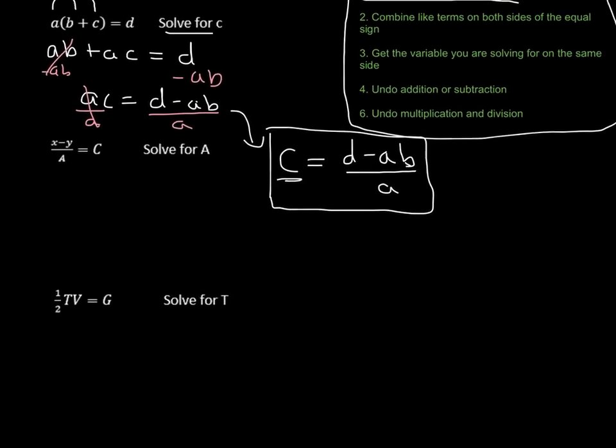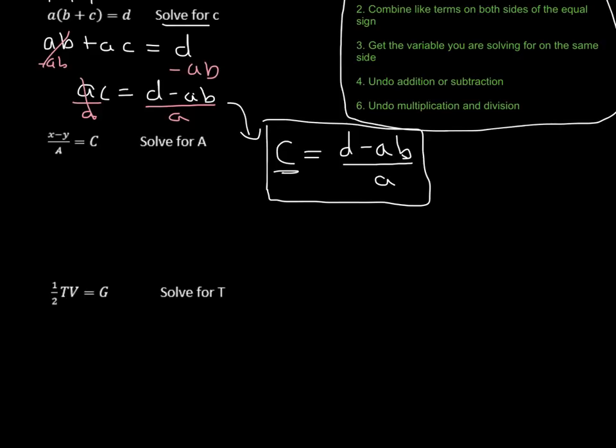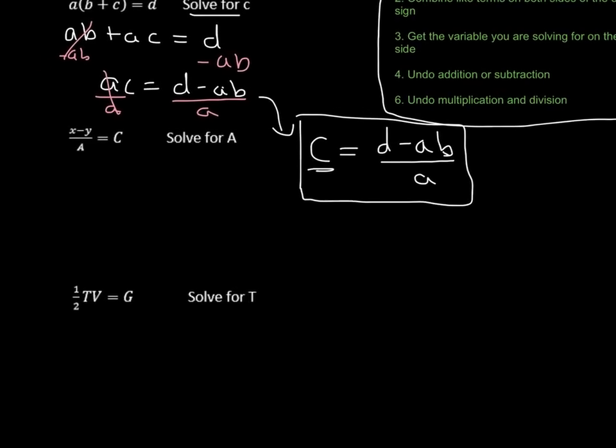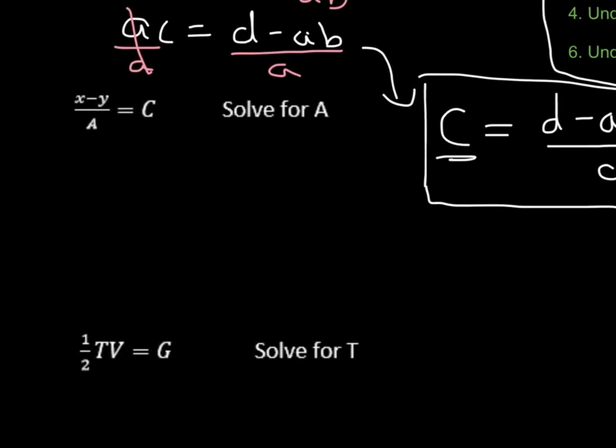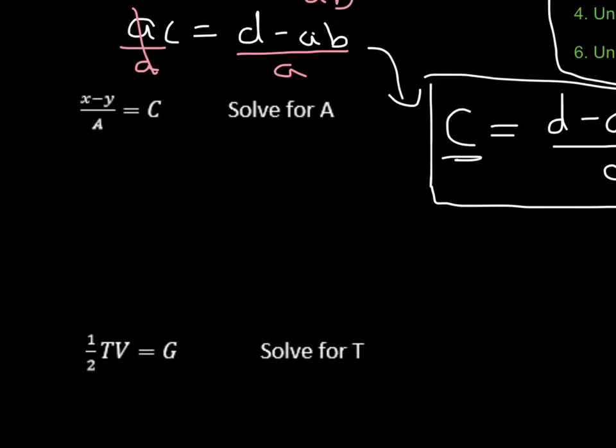Now let's go down and take a look at another one. This says x minus y over a equals c. Solve for a. So I've got this a in this denominator down here. I'm not really sure how I'm going to get it out. Sorry, I'm going to zoom in a little bit.